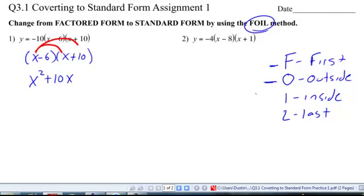I'm going to do my inside next. My inside. So that's negative 6 and X. Remember, it always maintains its sign. Its sign always sits in front of it, so it's a negative 6 times X, which gives me negative 6X.